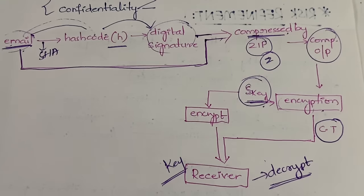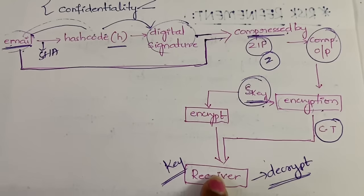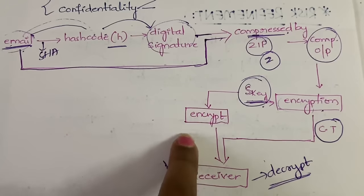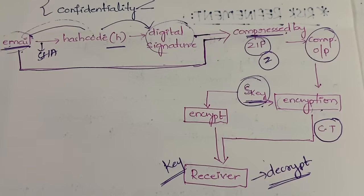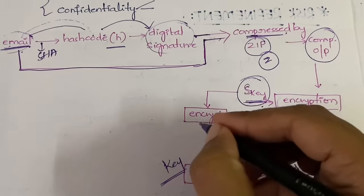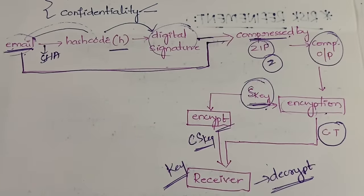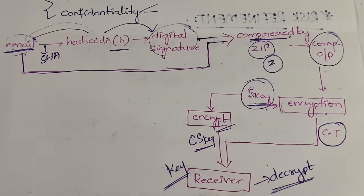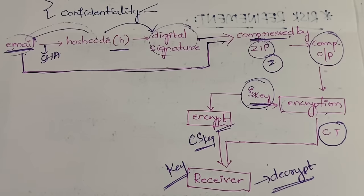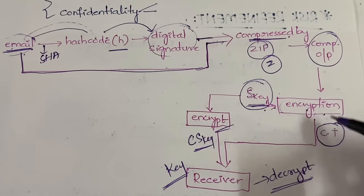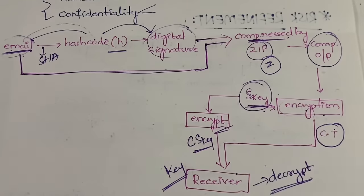However, there is a twist: the symmetric key is not directly sent to the receiver. Instead, the symmetric key itself is encrypted — converted into a cipher symmetric key. The encrypted key is sent to the receiver, who must first decrypt the key, obtain it, and then use it to decrypt the message. So both the ciphertext and the encrypted symmetric key are sent to the receiver.